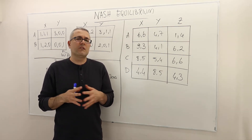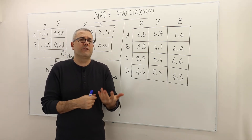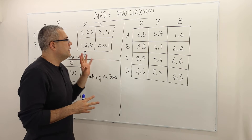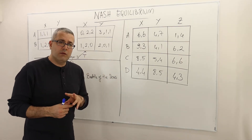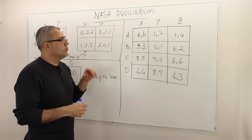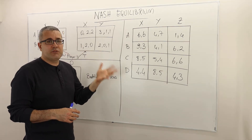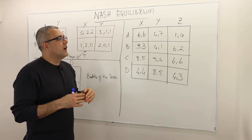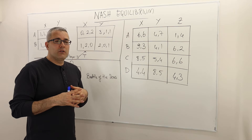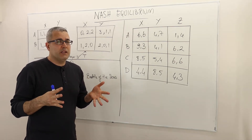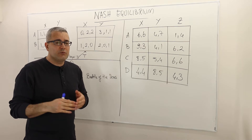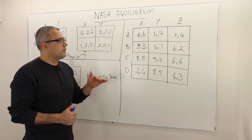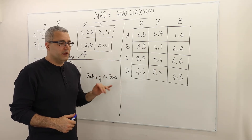Hi guys, welcome back. So let's use the notion of Nash equilibrium and best responding to find the Nash equilibrium of these three simple games. They are simple partly because we can represent these games in matrix form, so finding Nash equilibrium is probably the easiest. Later we're going to look at games where players have infinitely many strategies, where finding Nash equilibrium will be more involved. But let's go step by step.